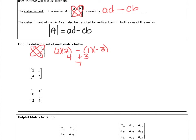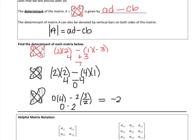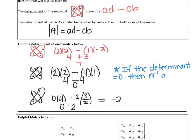Here are your answers. All of these values are definitely possible. You can have a negative determinant, a positive determinant, and you can have zero. But just to recall from our previous unit, if you get zero as a determinant, that just means there will be no inverse matrix.